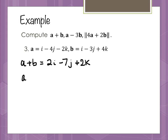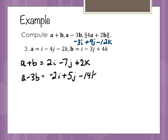For a minus 3b, we multiply vector b by negative 3, giving negative 3i plus 9j minus 12k. Adding that to vector a gives negative 2i plus 5j, and then negative 2k plus negative 12k gives negative 14k.